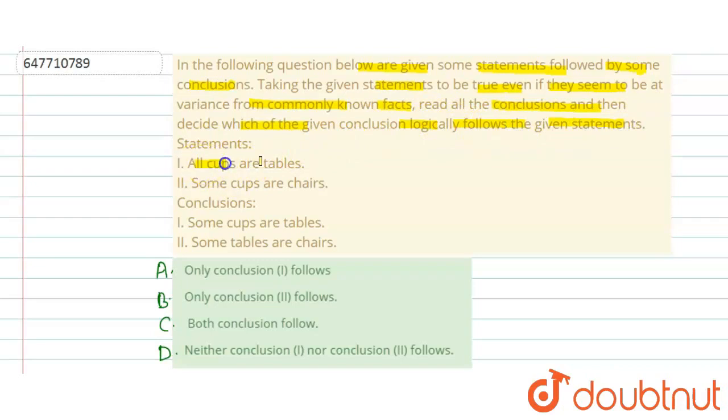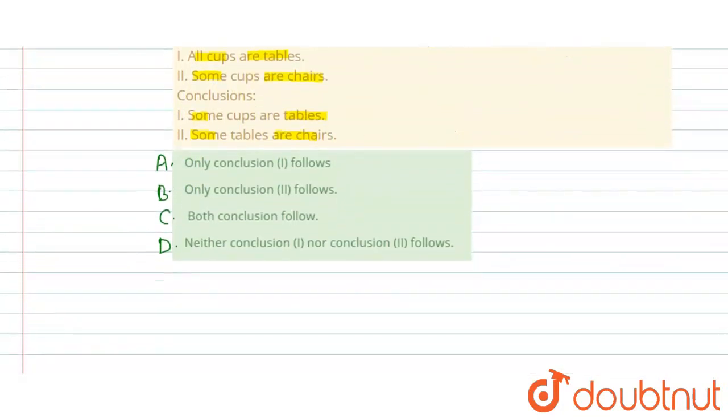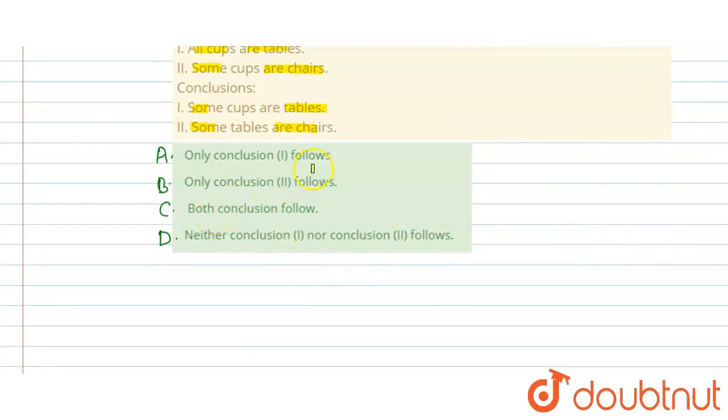The statements are: all cups are tables, some cups are chairs. And the conclusions are here. Here are two conclusions given: some cups are tables, some tables are chairs. So, here we have to tell you about this statement, according to which conclusion we will follow or not.